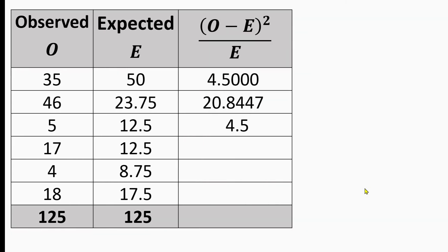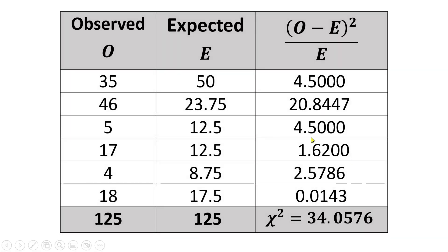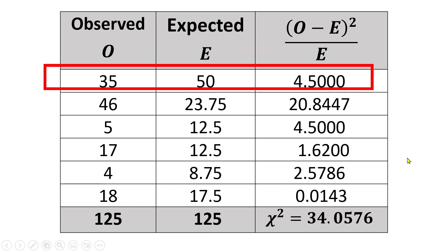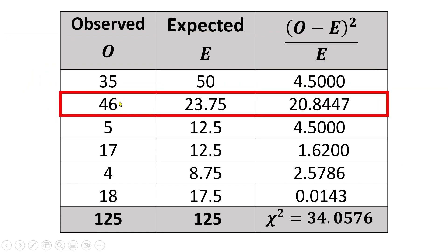We go down through each pair of observed and expected and calculate each contribution to the chi-squared statistic. In the end, you're going to get these values. The interesting thing to notice is that most of the six observations make a fairly small contribution to the chi-squared statistic. The only really substantial contribution is made by the second category — the Sicilian defense — where the observed count is much bigger than what would be expected under the null hypothesis. At the local chess club, this defense is being played much more often than expected.